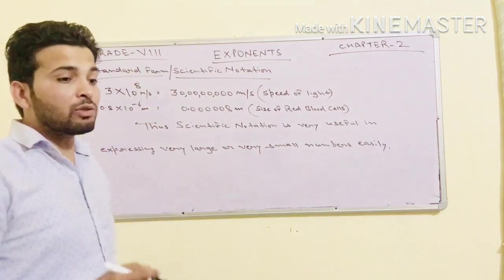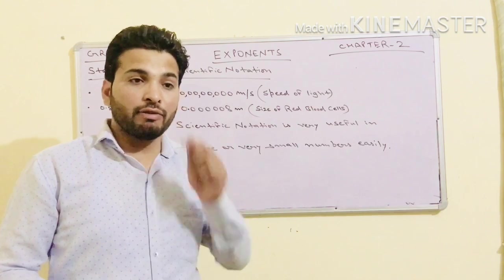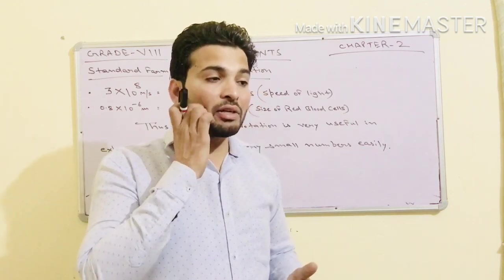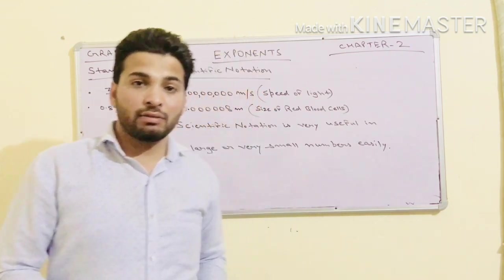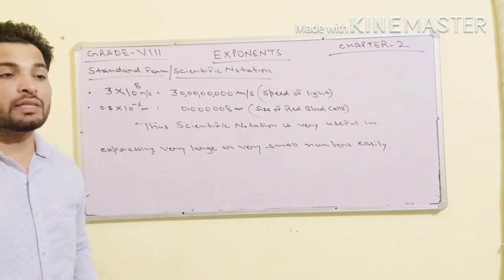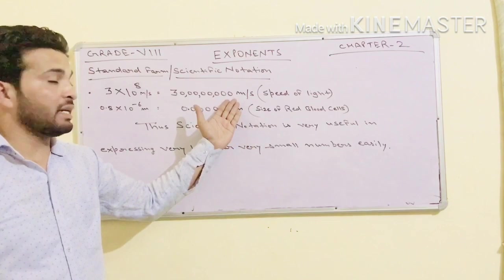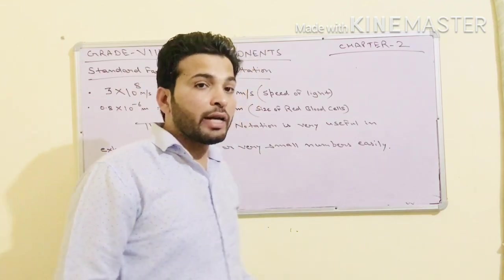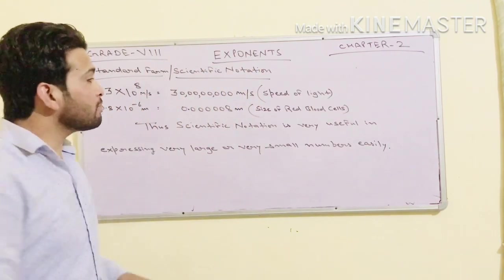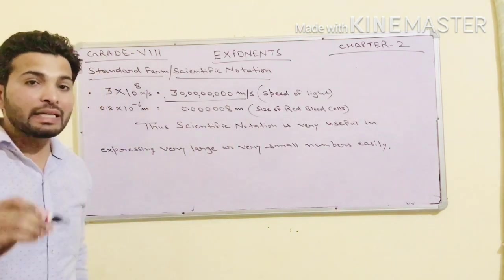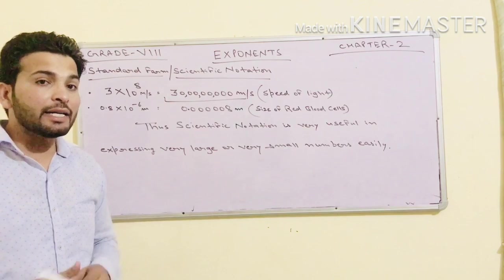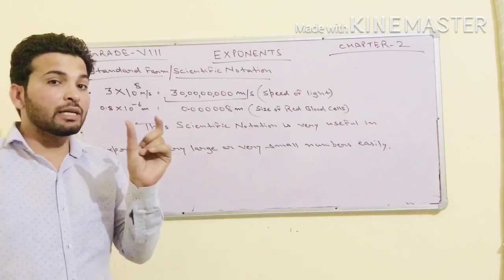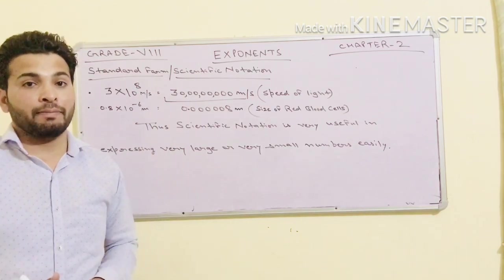Before doing the standard form or scientific notation, you must know what scientific notation is and why it is used. One question I am asking: in science, what is the speed of light? The answer is 3 × 10⁸ meters per second. The actual meaning of this is 30 crore meters per second — that is how far light travels in one second.